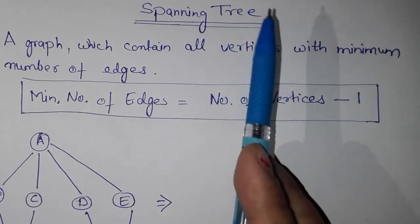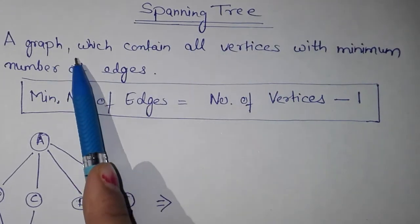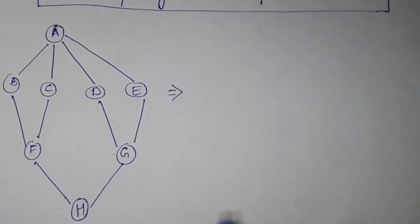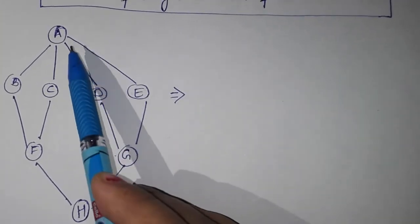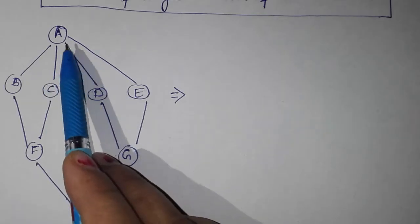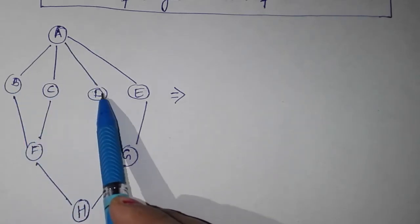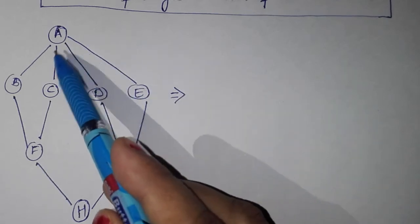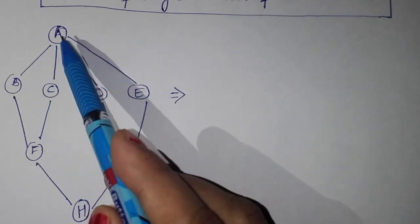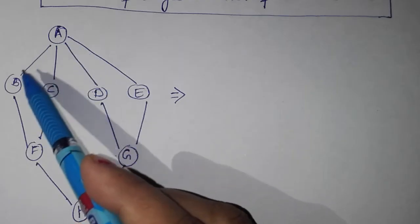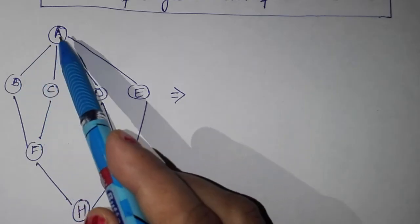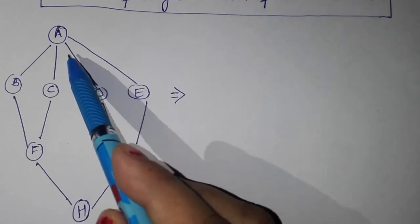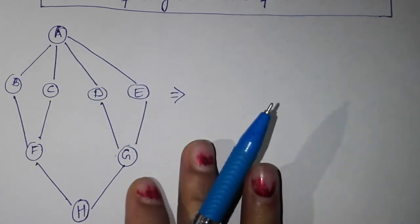Spanning tree. First you need to know about graphs. Here is a graph. A graph contains a number of vertices: A, B, C, D, E — all of these are vertices. Each vertex is connected to another vertex through an edge. A and B are connected through this edge, A and C through this edge, and A and D through this edge, and so on.